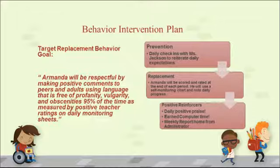For his behavior intervention plan, Armande, myself, and Ms. Jackson sat down and came up with a goal. The goal stated that Armande would be respectful by making positive comments to peers and adults using language free from profanity, vulgarity, and obscenities 95% of the time, measured by positive teacher ratings on daily monitoring sheets. Our tier-structured intervention consisted of prevention with Armande checking in daily first thing in the morning so that Ms. Jackson could reiterate daily expectations. His replacement behavior was scored by a self-monitoring sheet that he was responsible for.